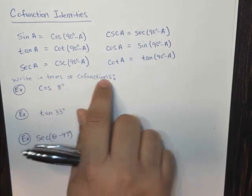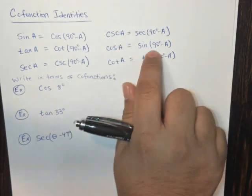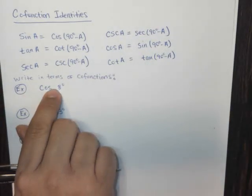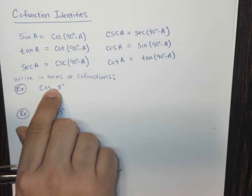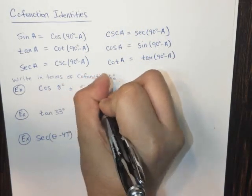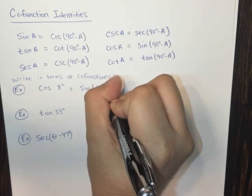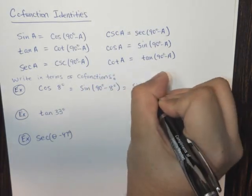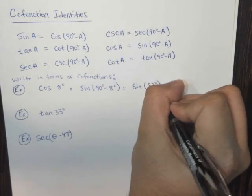So cosine would be the sine of 90 minus, in this case, 8. So that one's really simple. This is going to be the sine of 90 minus 8. So this is really simple.